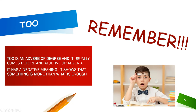Let's check the first one. The first one is 'too'. Too is an adverb of degree, and it usually comes before an adjective or an adverb. It has a negative meaning, so it's used to show that something is more than what is enough. Now in the next slide you will see some structures about this adverb, how we can use it, and some examples.